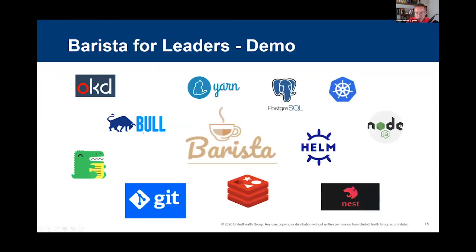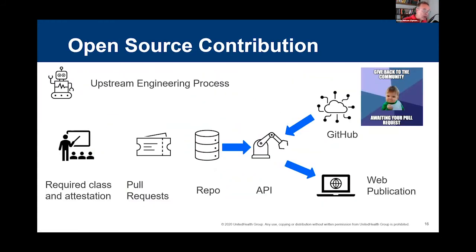We've been talking a lot about Barista — it's open source, it's out there. Please go look at it, watch what we're doing, ask questions in the issues, download it, deploy it, see if you can break it, tell us what to do to make it better. We'd really like to build a community around Barista. Now for the opposite of what Barista is designed for — our upstream engineering program — this is our concept of how we govern giving software back to the open source community. We call it upstream engineering. I'll talk briefly about how our process works and then show you the results of the tools we use to track this.